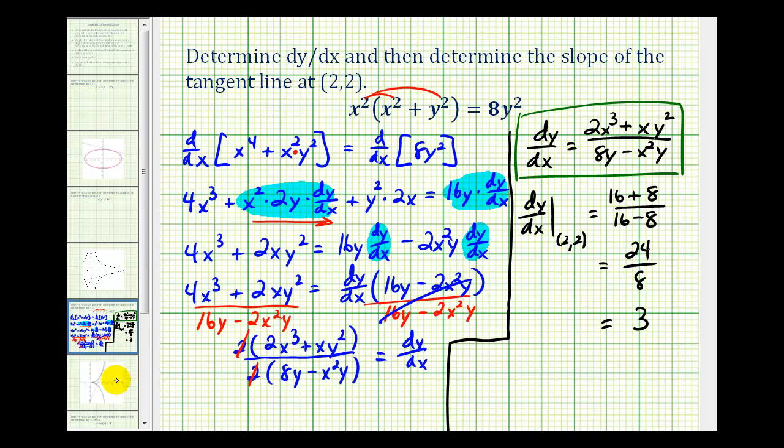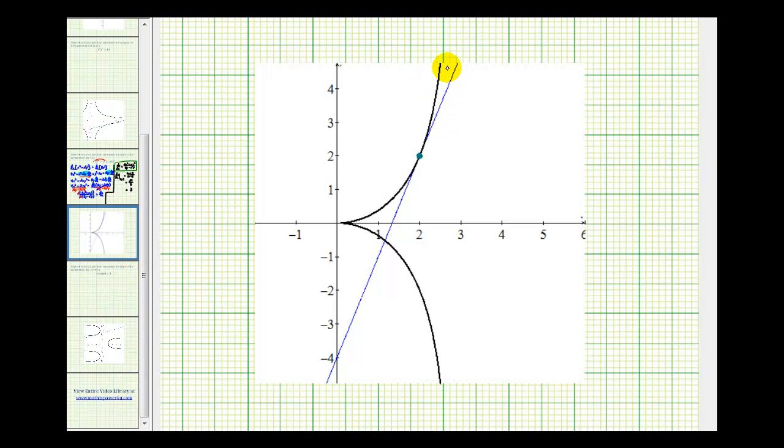Let's check that graphically. So here's the graph of our equation in black and the tangent line at the point (2,2) is graphed in blue. Notice this tangent line has a y-intercept of negative 4, which means the equation of the tangent line would be y equals 3x minus 4. Let's go ahead and check the slope between these two points.